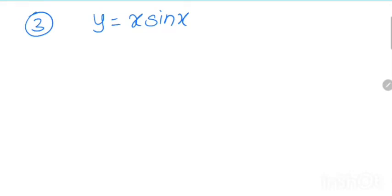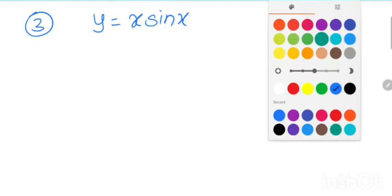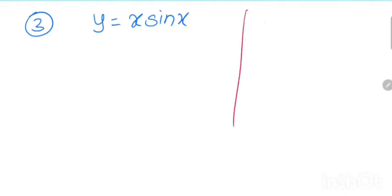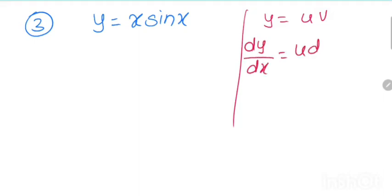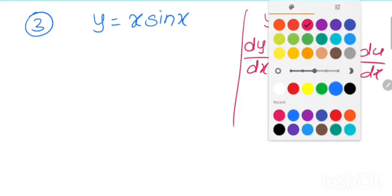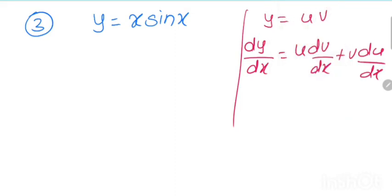Here we use the u into v rule. When y is equal to u into v, meaning two functions are in multiplication, then dy by dx is equal to u dv upon dx plus v du upon dx. We will use this formula to solve this problem.